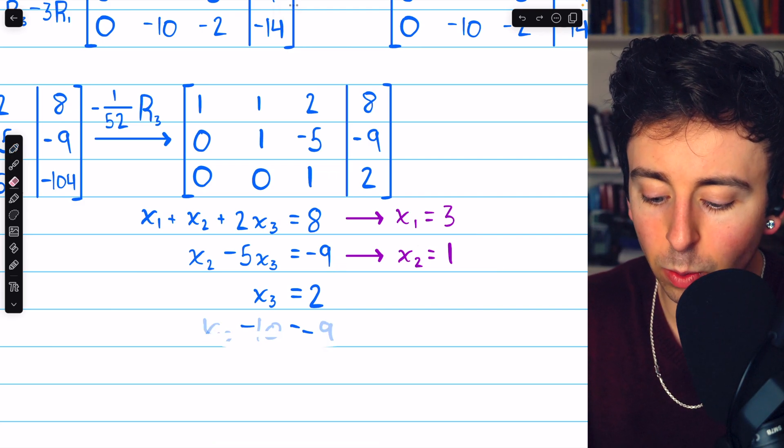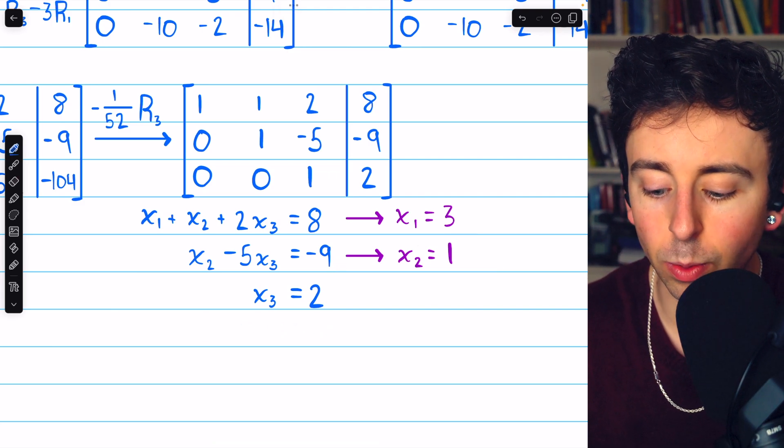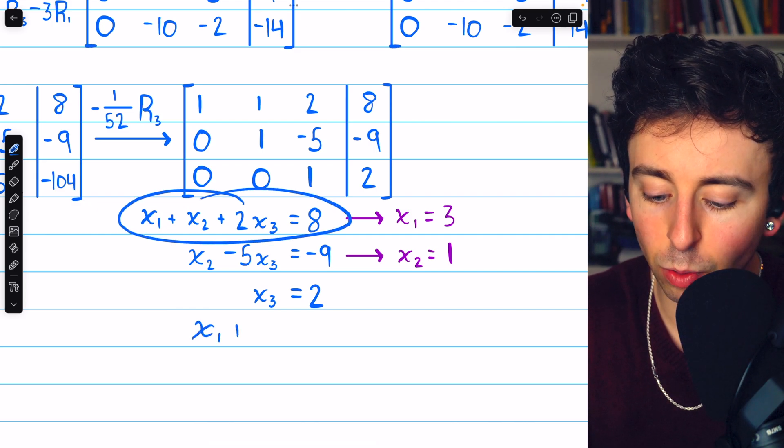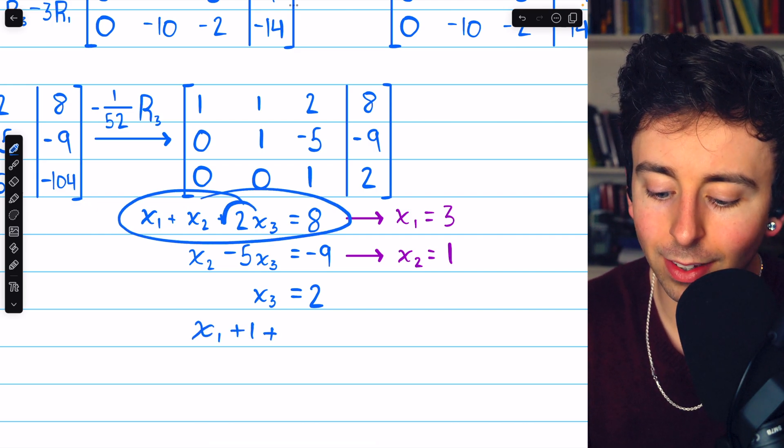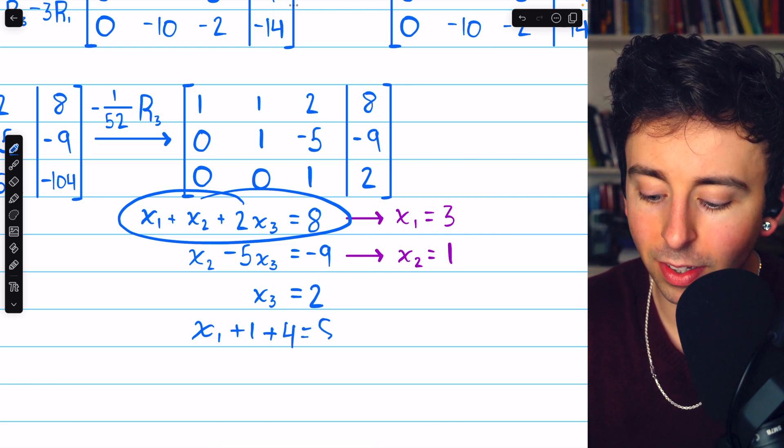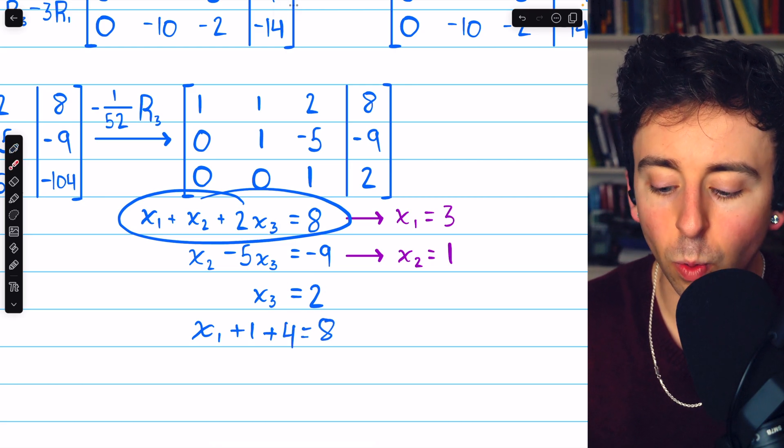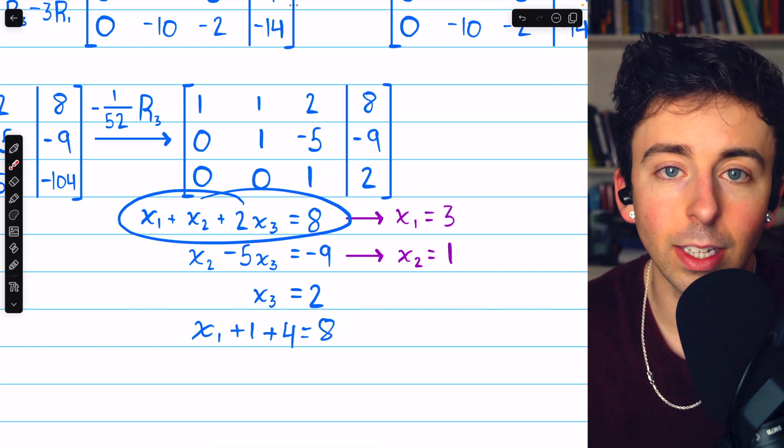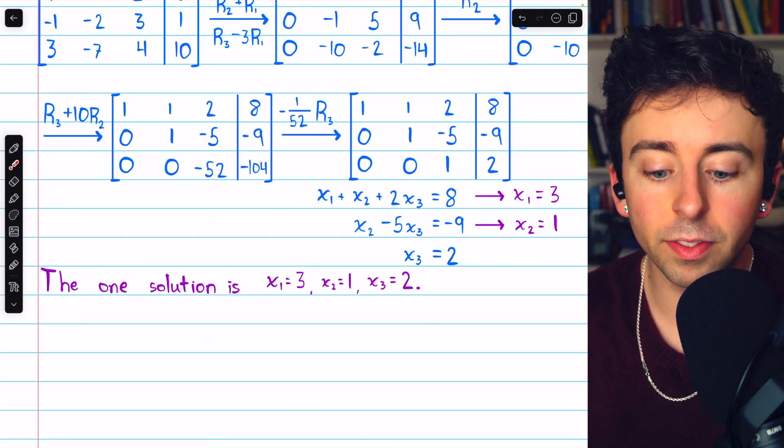But if x2 equals one and x3 equals two we can plug that into the first equation to get that x1 plus one plus two times two which is four must equal eight. And so x1 would equal eight minus four minus one so x1 equals three. And we've solved the system.